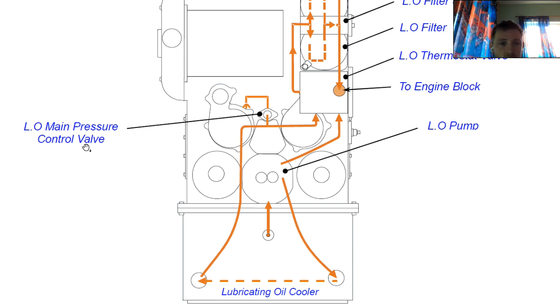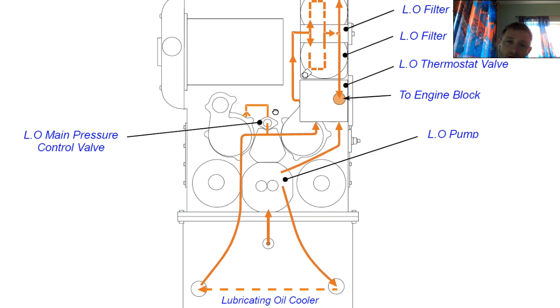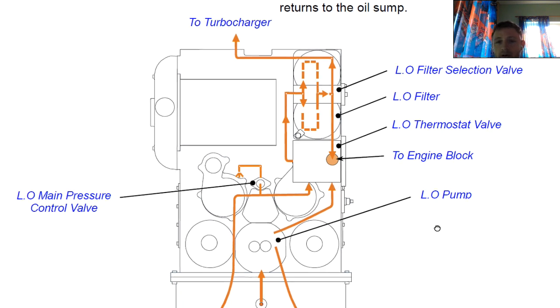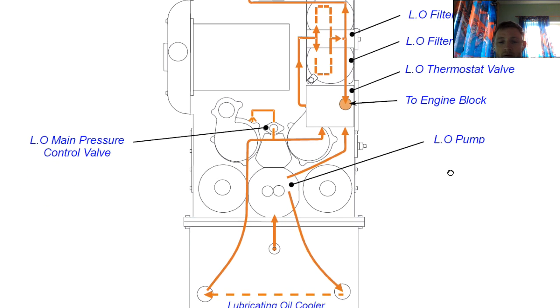This is also our lube oil main pressure control valve, which we can set the pressure of the engine. But mostly this will be done when the engine starts, an initial setting of the engine. So that is it, that is our flow chart, how the oil flows.